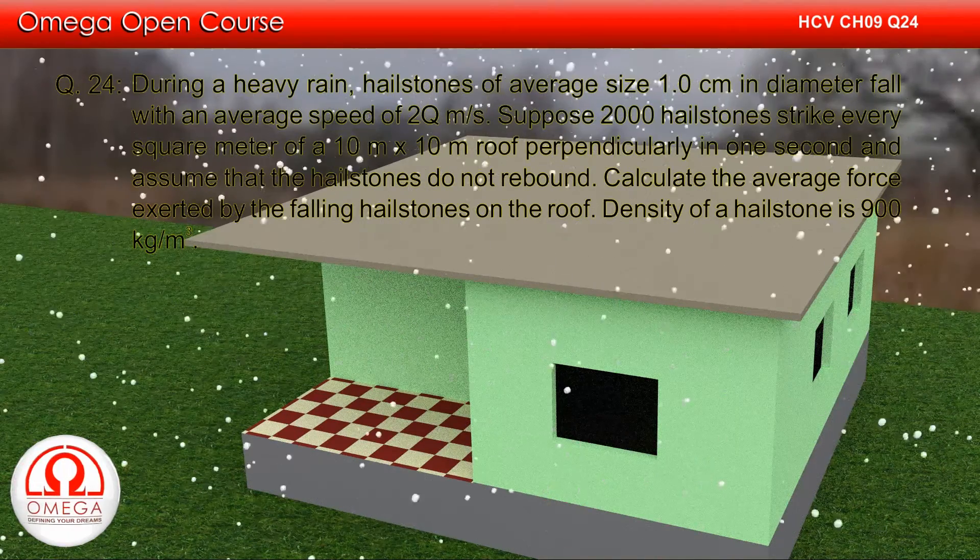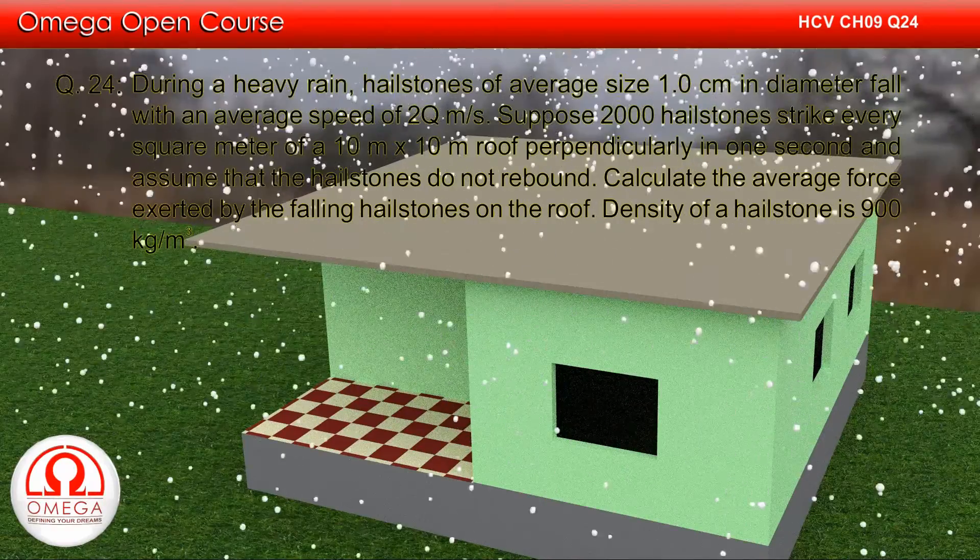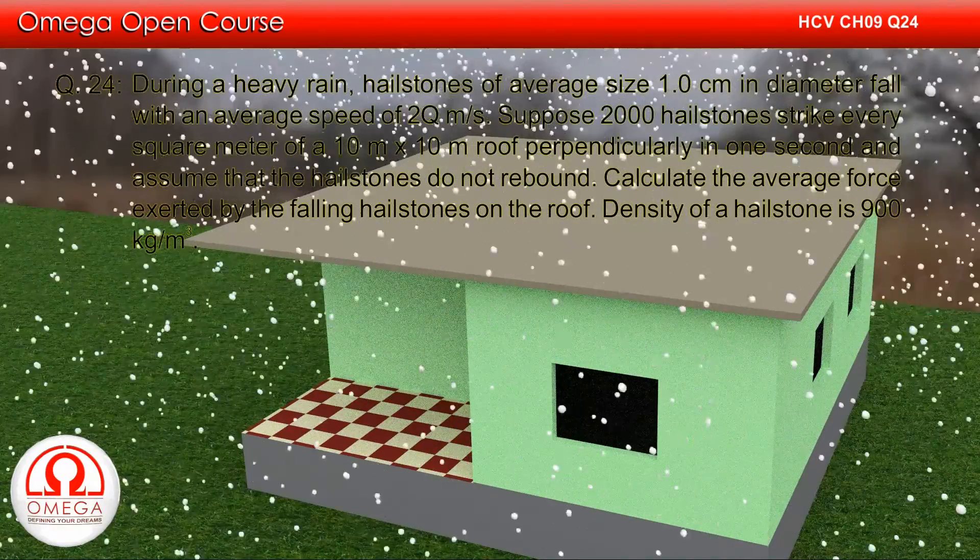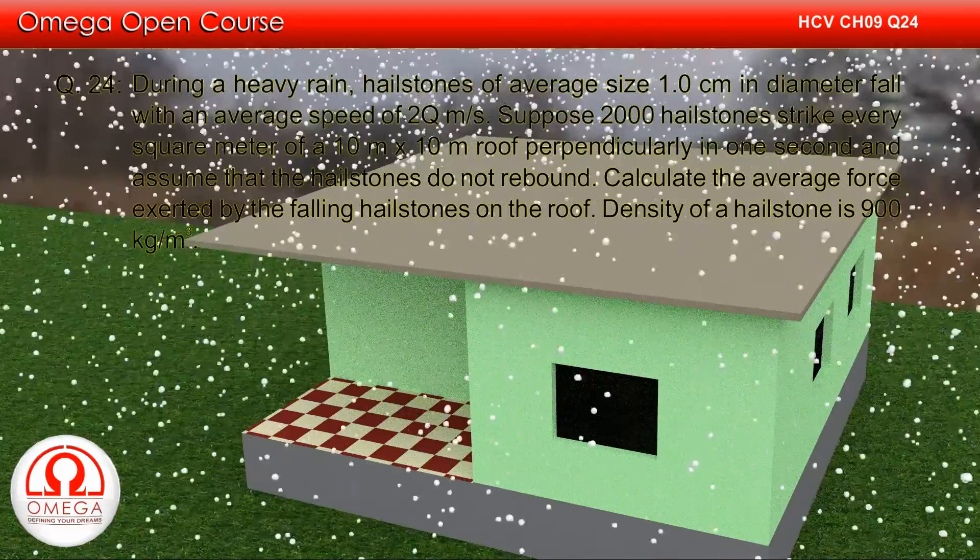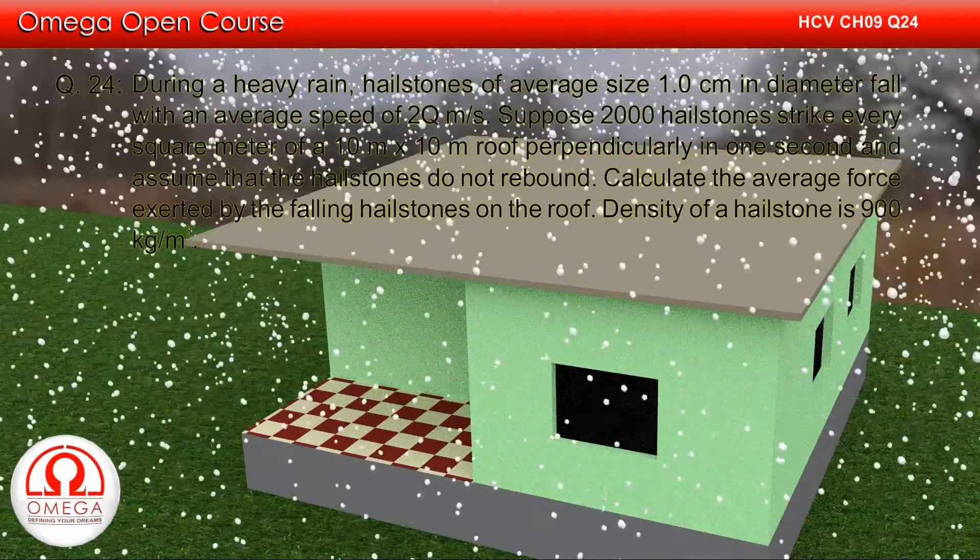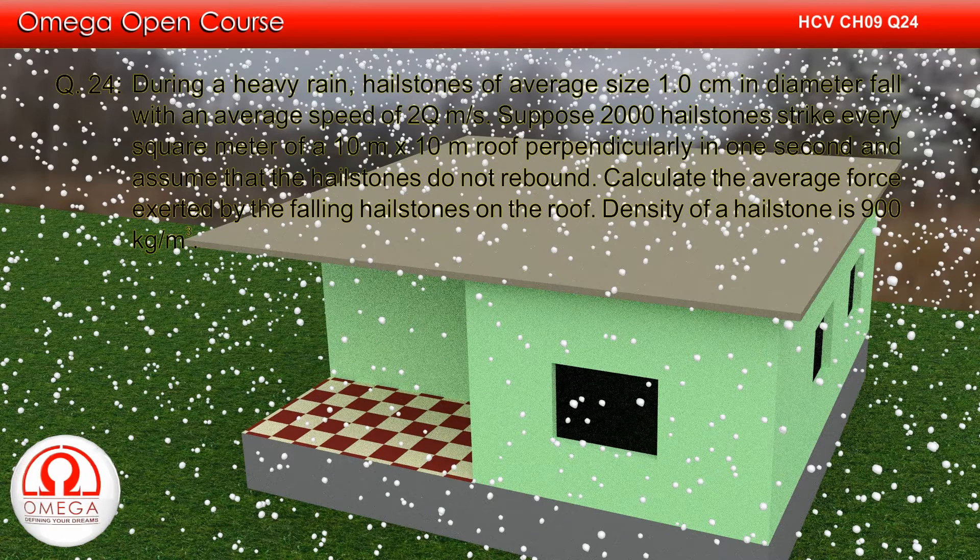During a heavy rain, hailstones of average size 1 cm in diameter fall with an average speed of 20 m per second. Suppose 2000 hailstones strike every square meter of a 10 by 10 roof perpendicularly in one second and assume that hailstones do not rebound. Calculate the average force exerted by the falling hailstones on the roof.